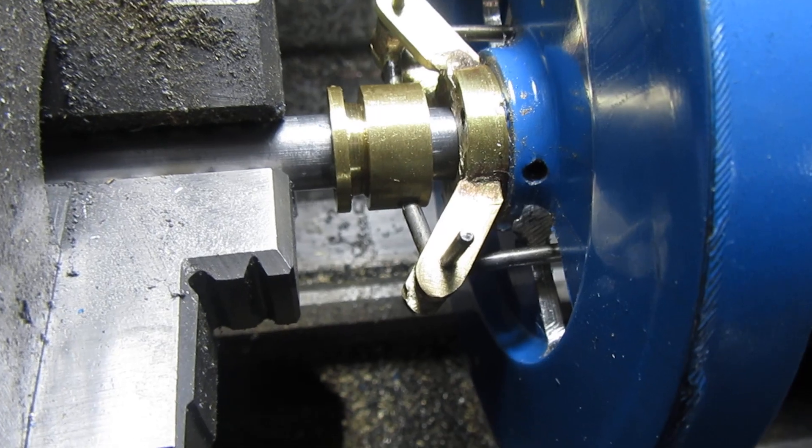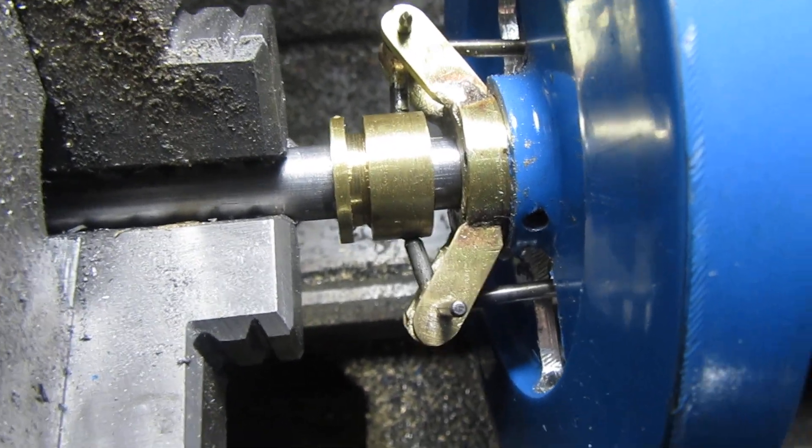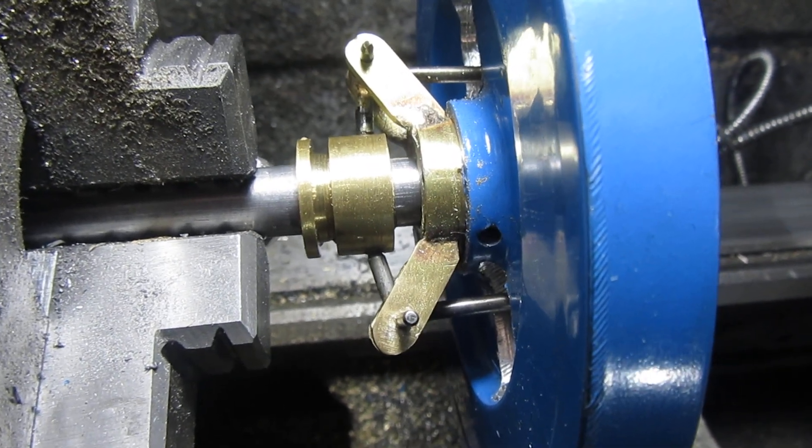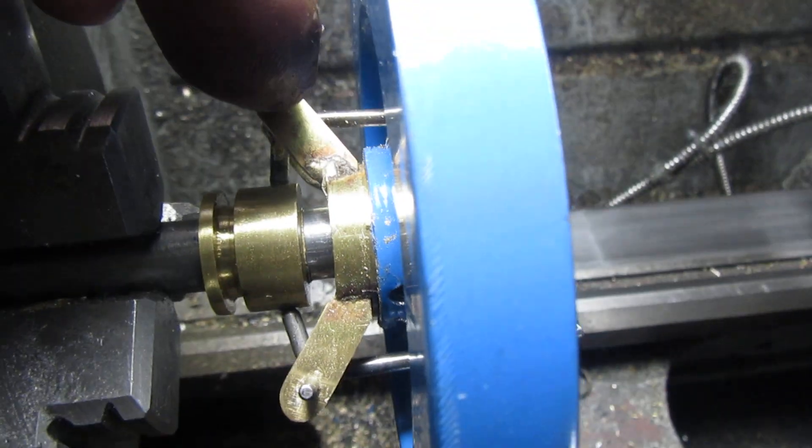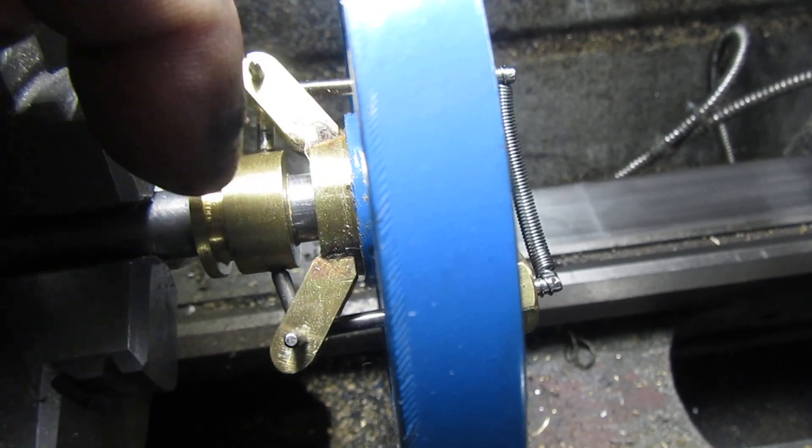Now, the end of those little rods that go into the sliding sleeve have a ball shape to them. As the governor engages, the weights will fly out, the arms will pivot, and it will slide this piece with the groove in it back and forth.